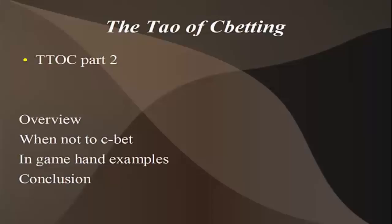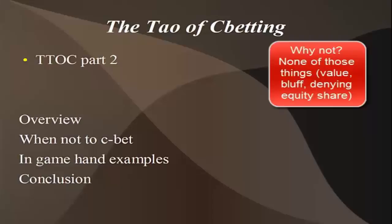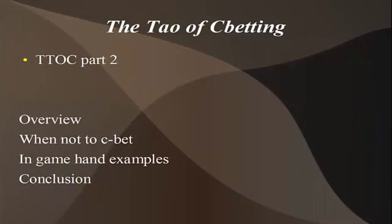In the first video, we talked about the reasons why it makes sense to make a continuation bet. We asked the question: does it make sense to default CBet when checked to as preflop raiser? And we asked the question, does it make sense to default check to the raiser? We looked at the reasons that people do it, why it's kind of stood the test of time, and we examined it that way. We sort of implied in that first video that we'd be getting into the why nots of CBetting.